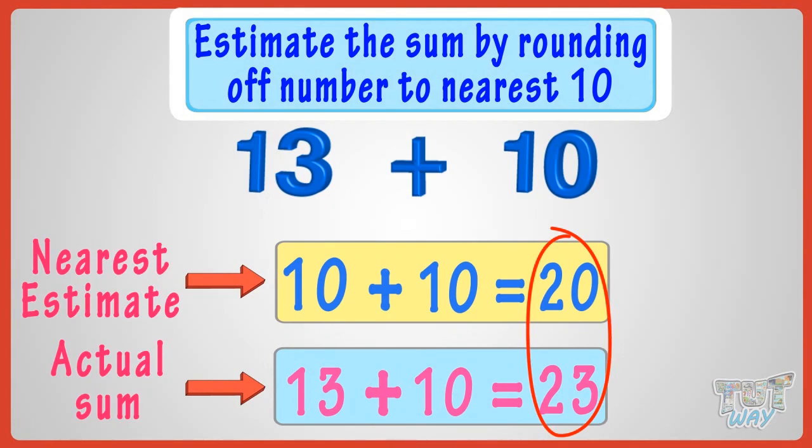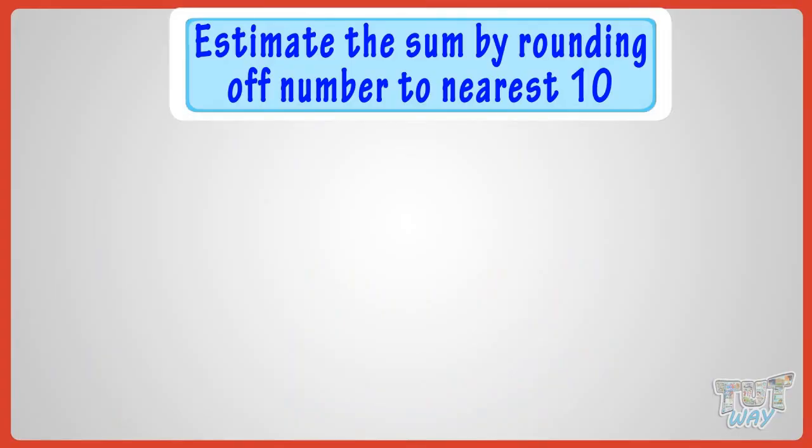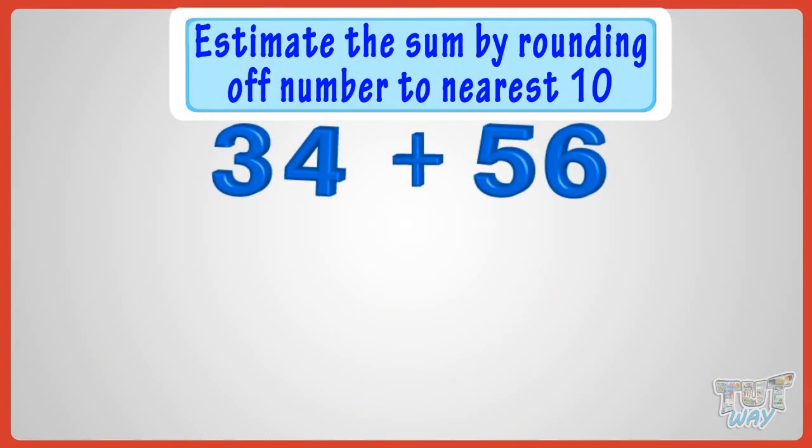Good! Now, let's take another example. You have to add 34 and 56. Here, both the numbers are midway between two 10s, so we will round off them.